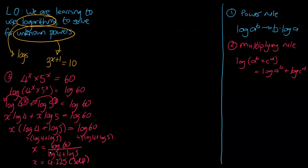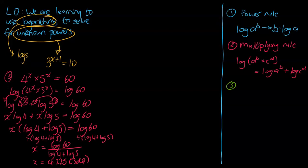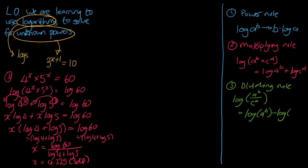That's the multiplication rule. The last rule we need is the division rule, and it's a very similar theme with one minor difference: if you've got log(a^b divided by c^d), that becomes log(a^b) minus log(c^d) — so division becomes subtraction. Let's finish the video by doing a division question.